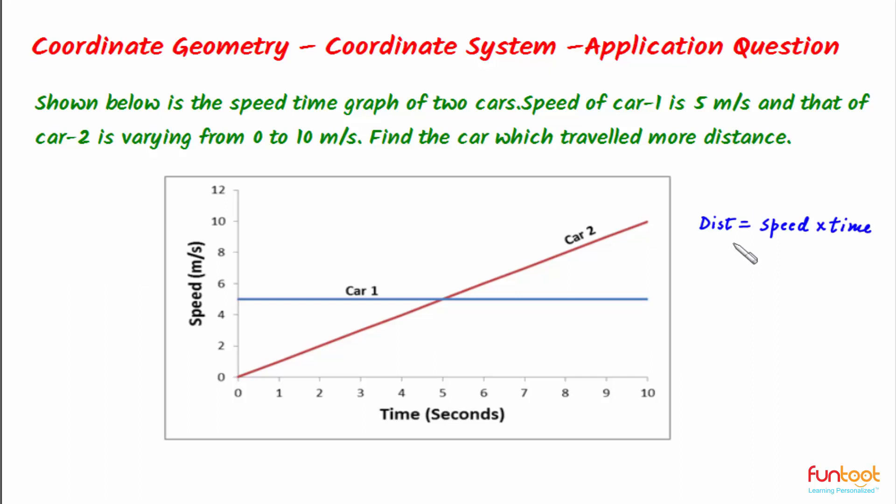We know formula for distance is speed multiplied by time. And if we consider the graph for car 1 and see the area under it. The area shaded in pink is the area under the graph of car 1 and we can see it is rectangular. And we know that area of the rectangular is length into breadth.